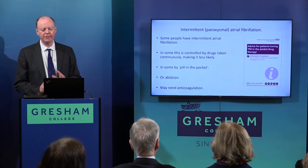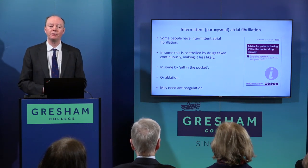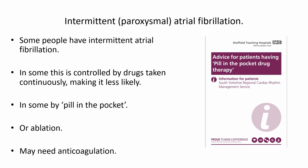Some people don't have steady AF but flip in and out of it — this is called paroxysmal atrial fibrillation. It can be managed in several ways: continuous drugs to maintain normal rhythm, or a 'pill in the pocket' approach where the patient recognizes when they're going into AF — sudden breathlessness, feeling the pulse change — and takes an anti-arrhythmic drug to flip back to normal. Ablation may again be used. Some will need anticoagulation, some may not, depending on their risk profile.